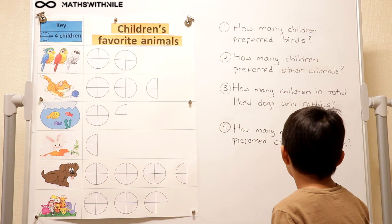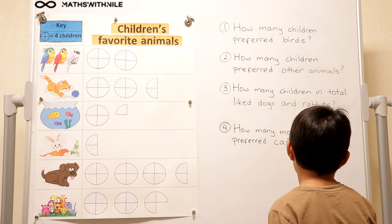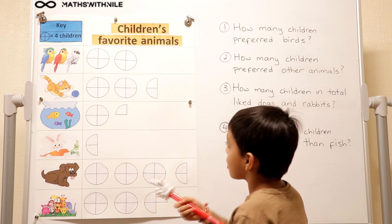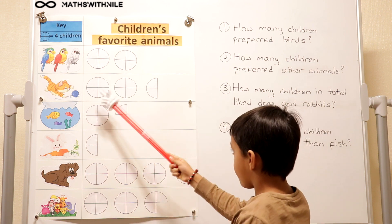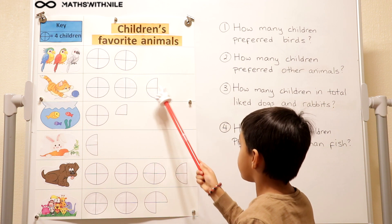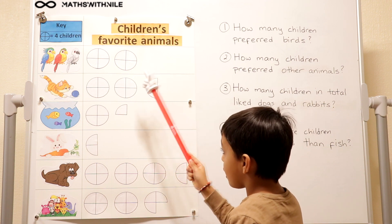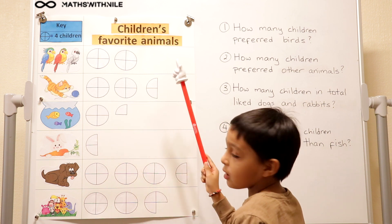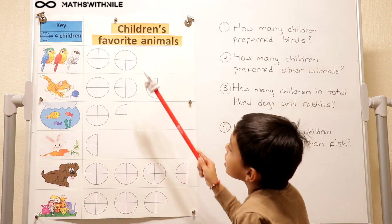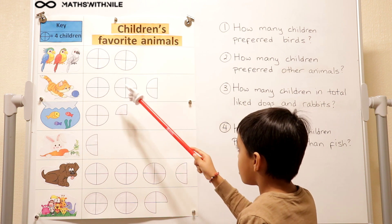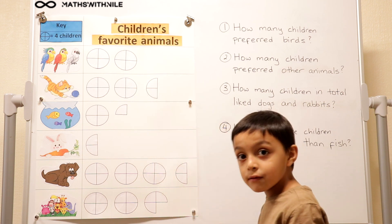How many more children preferred cats than fish? Well, cats has four, five, six... seven, eight, nine... ten. And fish has four, five. So that means three of these and these two, so three plus two equals five.